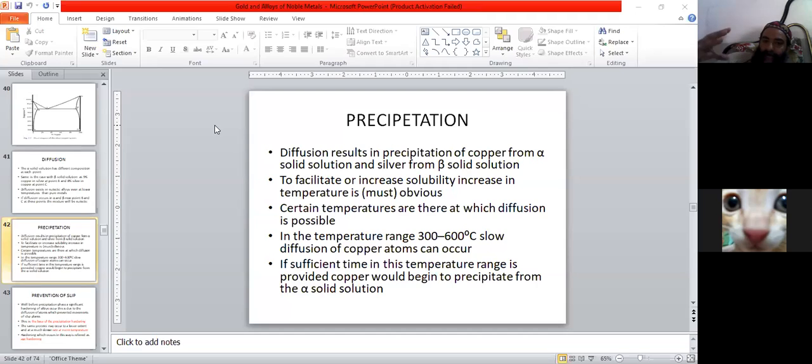Solubility increases with temperature. Now certain temperatures exist at which diffusion is possible. What are these temperatures? They range from 300 degrees Celsius to 600 degrees Celsius. In these temperatures, slow diffusion of copper atoms can occur.